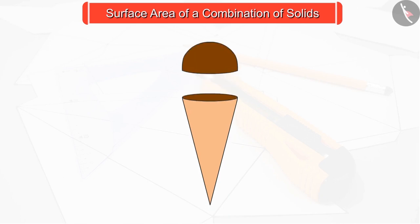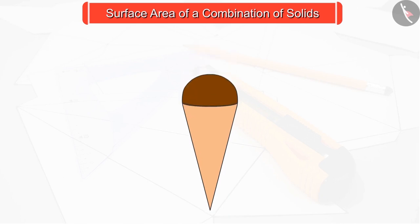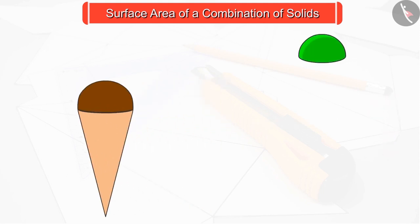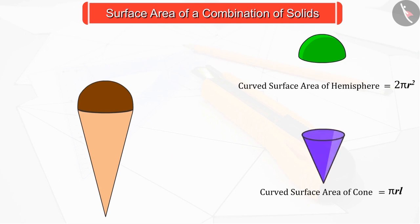Since we have to find the curved surface area of a figure that is formed by the combination of two or more figures, we will add the curved surface area of a hemisphere 2πr² and the curved surface area of a cone πrl.